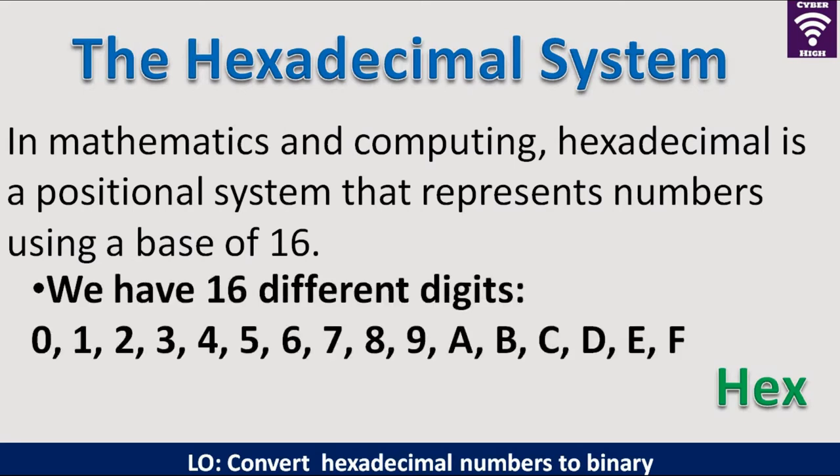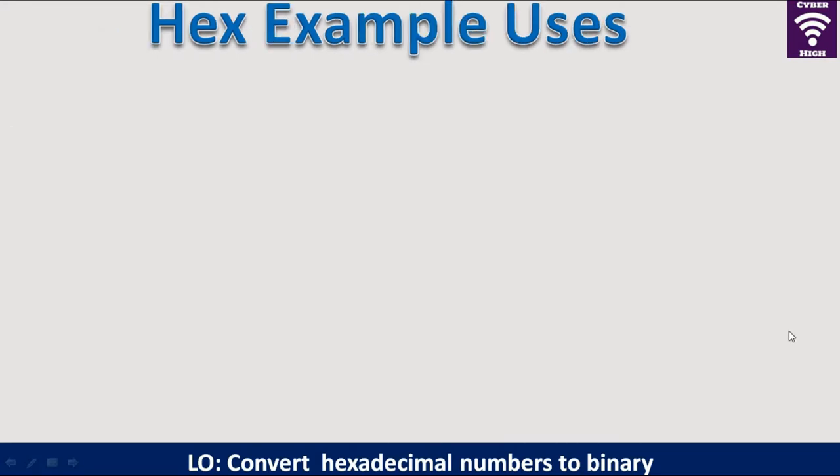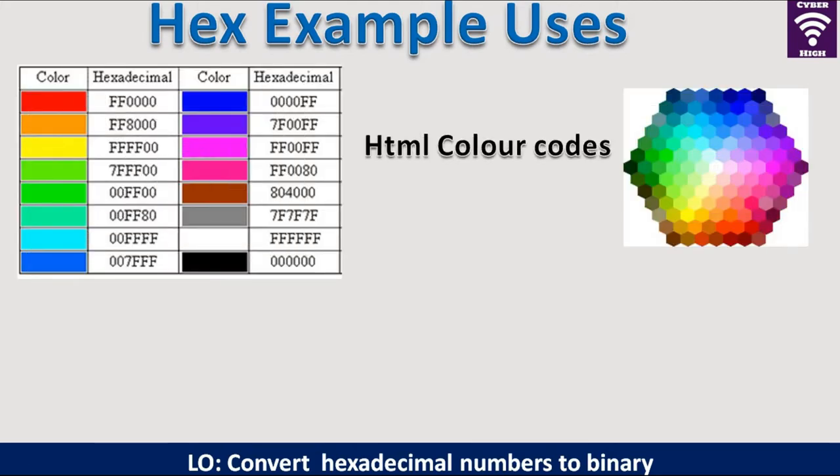In hexadecimal, we use 16 different digits to represent these numbers. This is from 0 up to 9 and then A up to F. Hexadecimal numbers are used in several ways. One of the ways is to represent color codes in HTML. In computing, each color is represented by six digits, which can be referred to as red, blue and green.